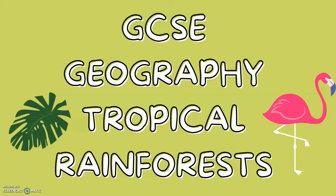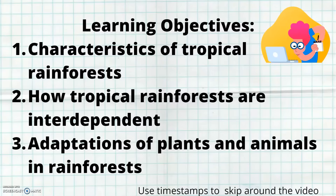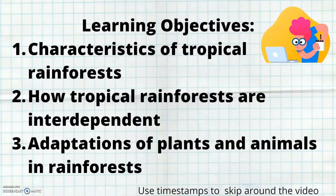The geography of tropical rainforests. Today, the learning objectives are: characteristics of tropical rainforests, how tropical rainforests are interdependent, and adaptations of plants and animals in rainforests. If you want, you can use the timestamps to skip around the video.